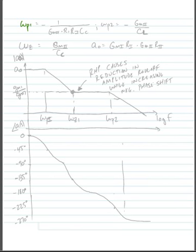If you'll recall, omega p1 was equal to minus 1 over gm2 times r1, r2, times cc, so this is dominated by the compensation capacitance.